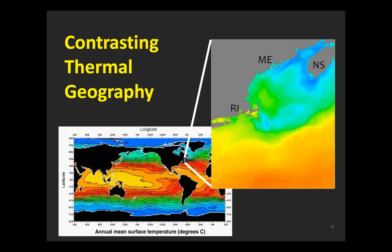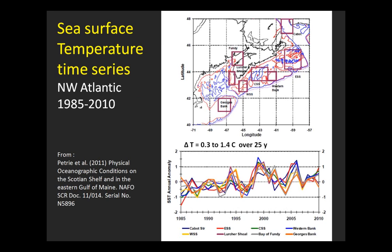This aspect of the oceanography is really significant to lobster distributions, biology, and biogeography. In terms of thermal temperature trends over the past 30 years or so, Petrie et al. produced this nice set of thermal trajectories in different boxes along the Scotian Shelf and Fundy area—all of which is to say, in short, that since the 1980s we've been seeing a temperature increase on the order of 0.3 to 1.4 degrees Celsius over the 25 years up to 2010.